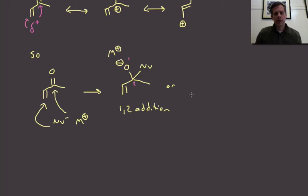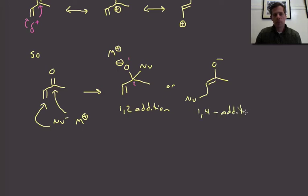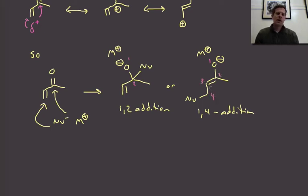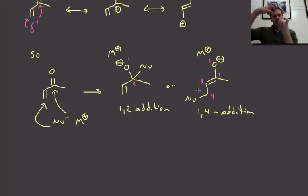Alternatively, we can get attack at the beta position. The nucleophile adds there, we push those electrons up, and we get this type of intermediate. This is called a 1,4 addition. The counter ion associates at position one (the oxygen), position two is the alpha carbon, three is the beta carbon, and four is the nucleophile attachment site. So we're describing the addition of nucleophile M or nucleophile H across that alpha-beta unsaturated carbonyl and describing the positional selectivity.